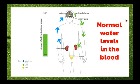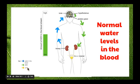This image shows the normal water levels in the blood. The key for the next couple of slides: blue arrows show water, the green arrow shows ADH, and the yellow arrows show urine. We can see a steady amount of water, a steady amount of ADH in the blood, and the kidneys are producing an even amount of urine.